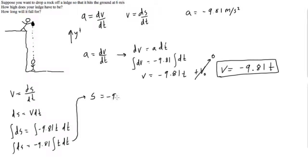And then we have the integral of t is one half t squared, and this is negative 9, here we could say negative 9.81 times one half t squared.